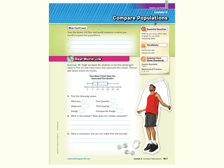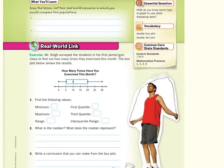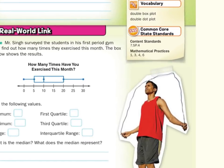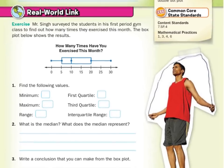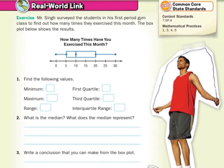As we look into our real-world link, Mr. Singh surveyed the students in his first period gym class to find how many times they exercised this month. The box plot, also known as a box and whisker plot, below shows the results. So how many times have you exercised this month?